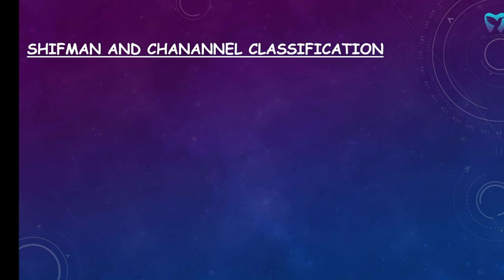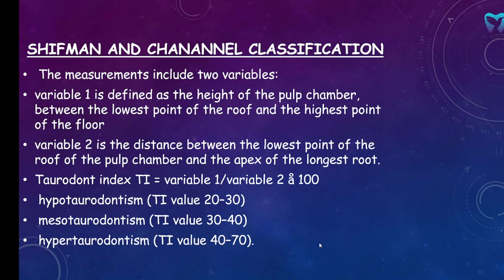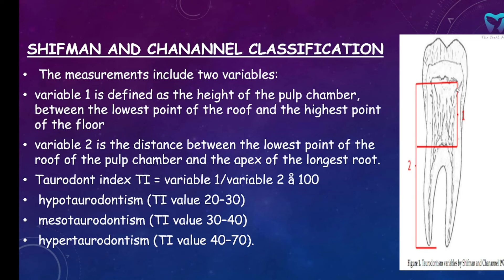The next classification is the Schiffman and Schenannle classification given in 1978. This measurement includes two variables. Variable 1 is measured from the lowest point of the roof to the highest point of the floor of the pulp chamber. Variable 2 is from the lowest point of the roof of the pulp chamber to the apex of the longest root. The taurodontism index is variable 1 divided by variable 2, multiplied by 100. Variable 1 will increase with taurodontism. If the value lies between 20 to 30, it is hypotaurodontism; 30 to 40 is mesotaurodontism; and 40 to 70 is hypertaurodontism. It all changes with the change in variable 1.